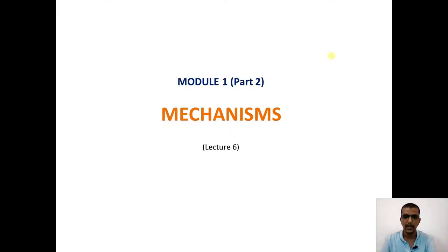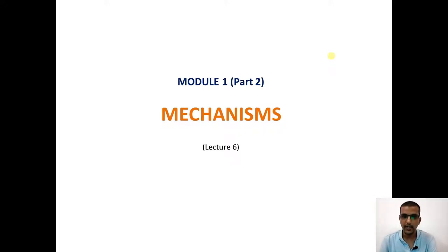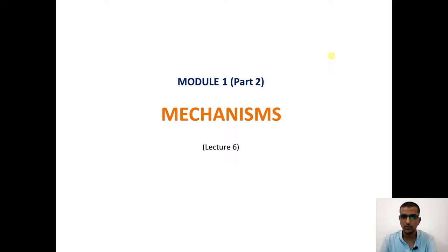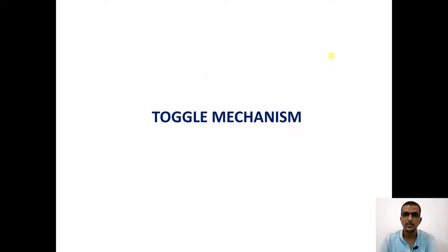Welcome to lecture 6 on mechanisms. Previously we have discussed quick return motion mechanisms, straight line mechanisms, and intermittent motion mechanisms. Now let us take an exclusive mechanism wherein we need to apply only a small amount of force to create a larger magnitude of force, and such a mechanism is called a toggle mechanism.